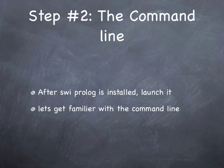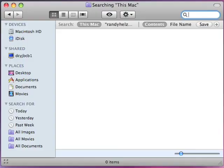On to step number two. Now that you've got it installed, let's launch it and get familiar with it. The first thing you need to do after it's installed is it's going to dump the executable someplace in your hard drive. Now, if you're on Windows, just go to your Start button and navigate down through your programs path down to SWIPL, and you can find it there.